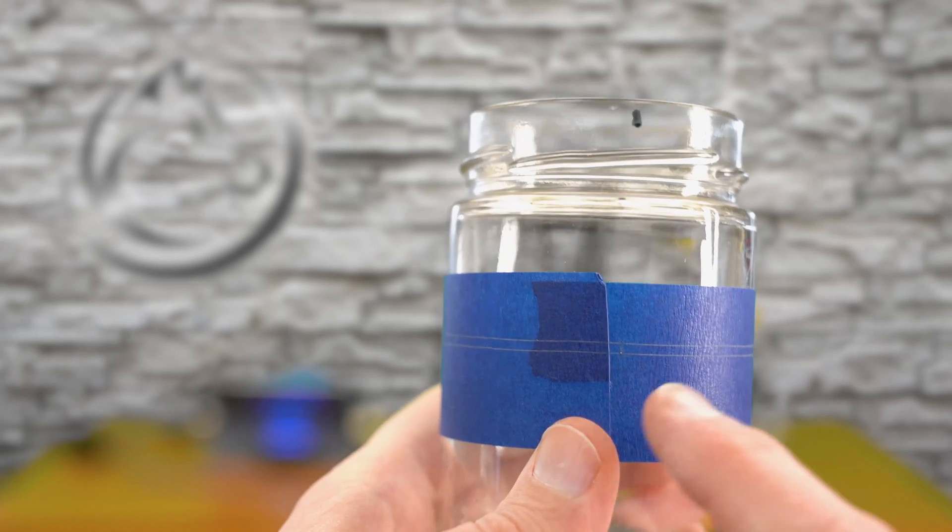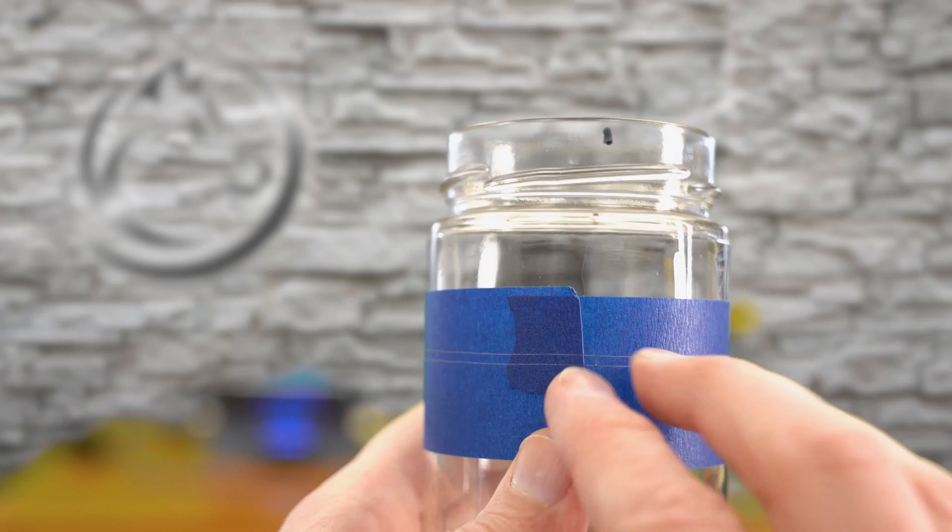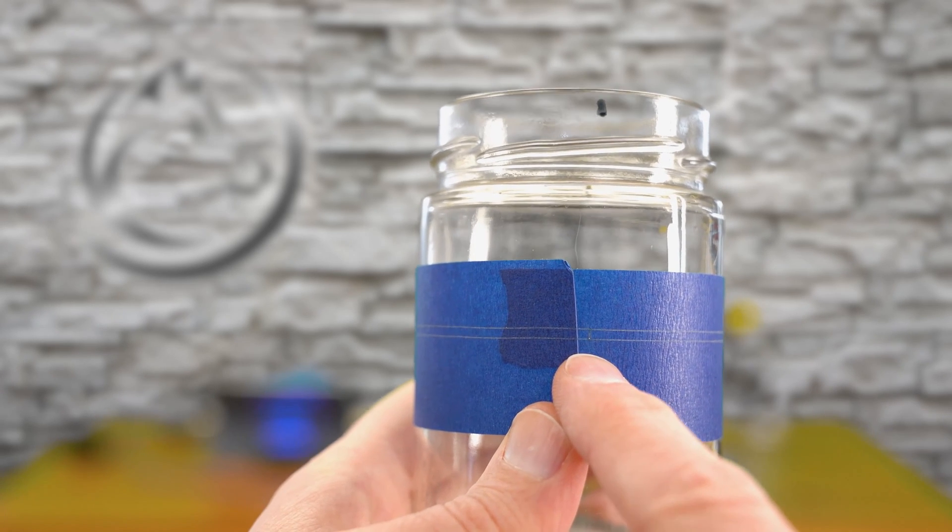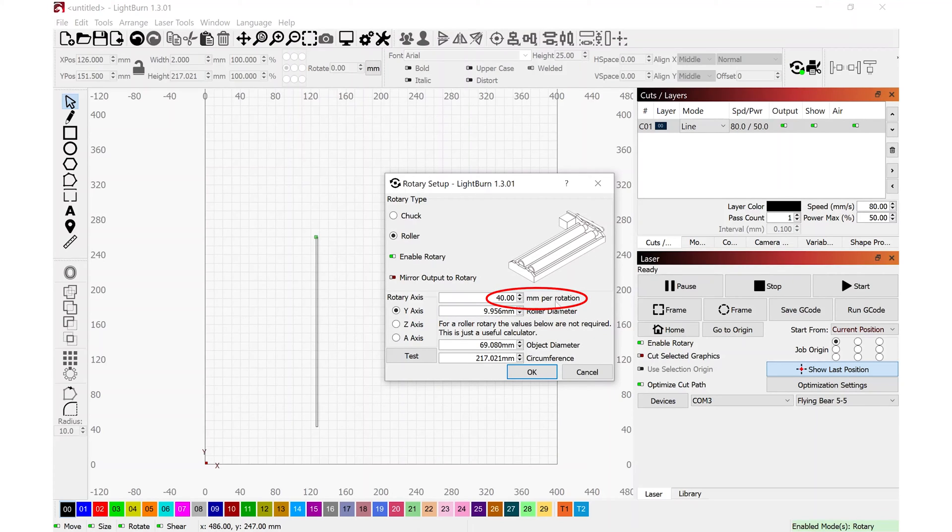I'll jump back into Lightburn and if you do have a gap for some reason there, if it's overlapping or there's a gap, I'll show you that setting in Lightburn once again. My test piece looked perfect, but if yours is off a little bit for some reason, I can navigate to rotary setup at the top of the screen. And this millimeters per rotation, this is the number that you'll need to change.